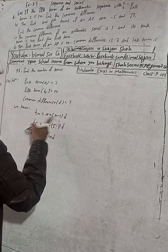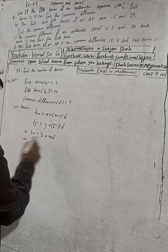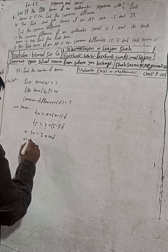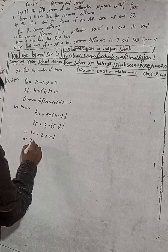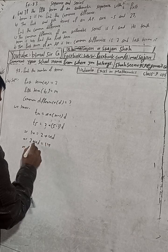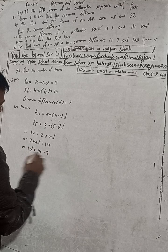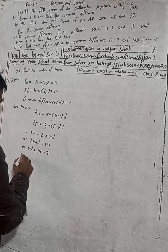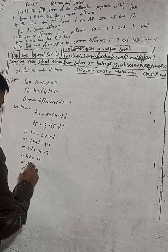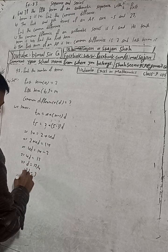We can also write T₅ = a + 4D. To find D, rearrange: 2 + 4D = 14, so 4D = 14 − 2, which gives 4D = 12, therefore D = 12/4 = 3. The answer is D = 3.